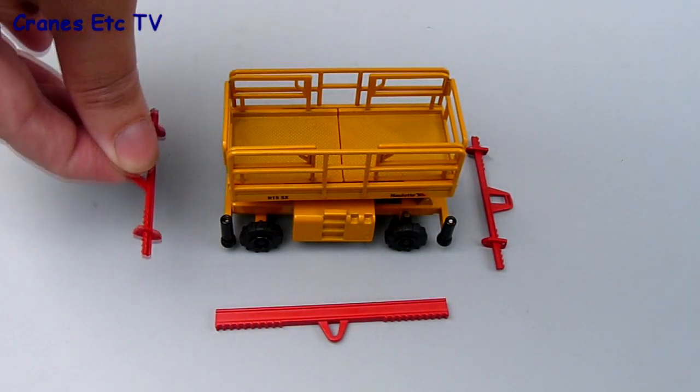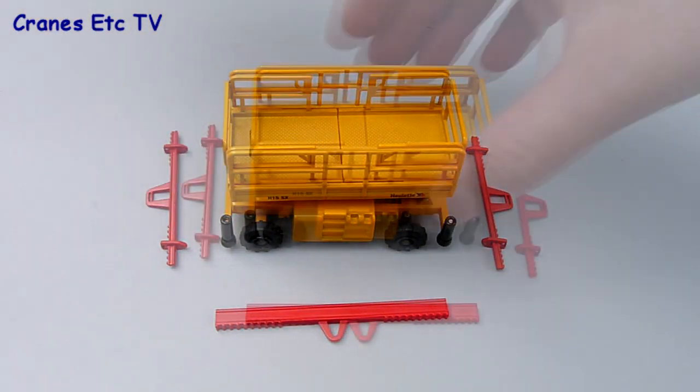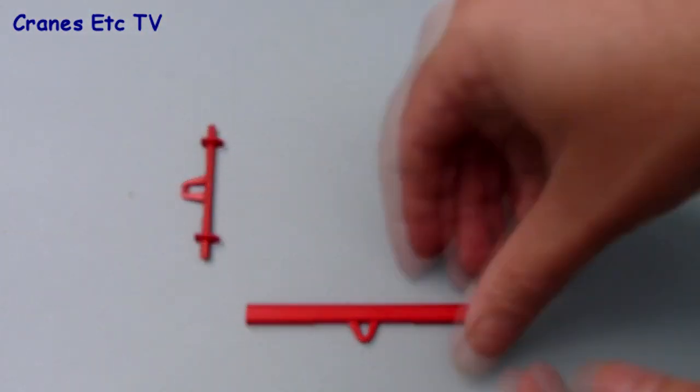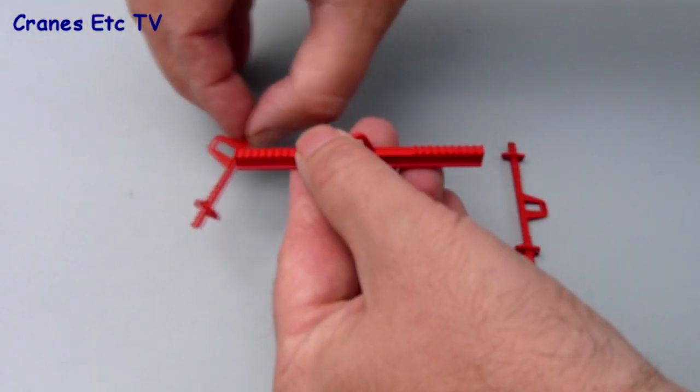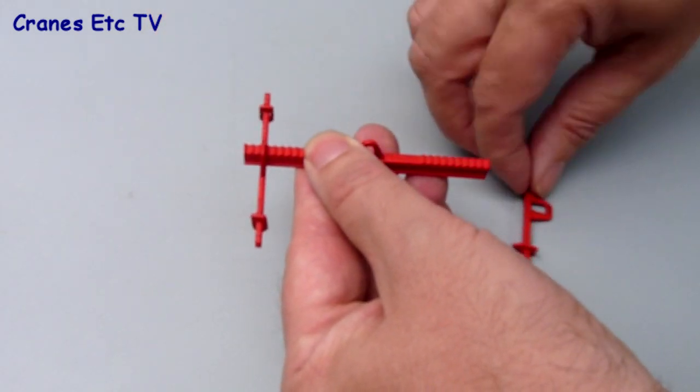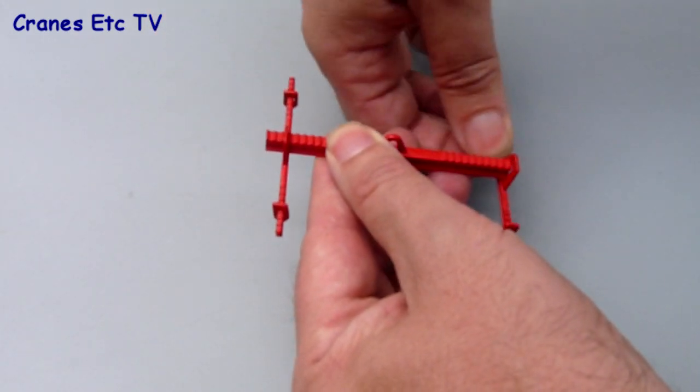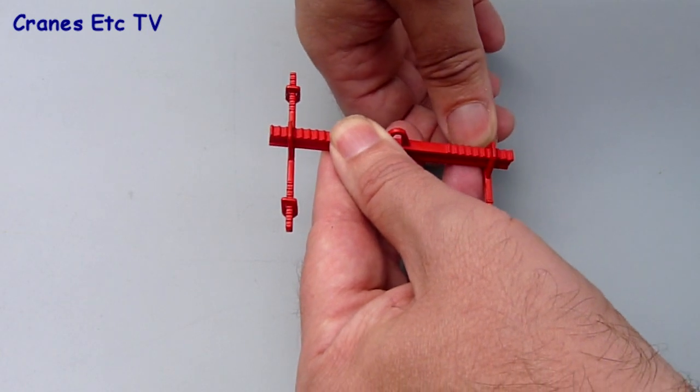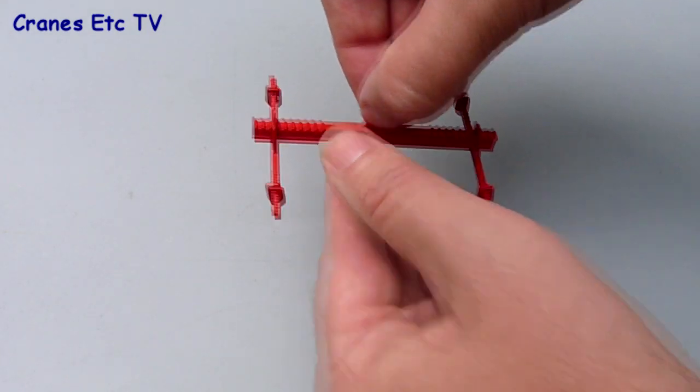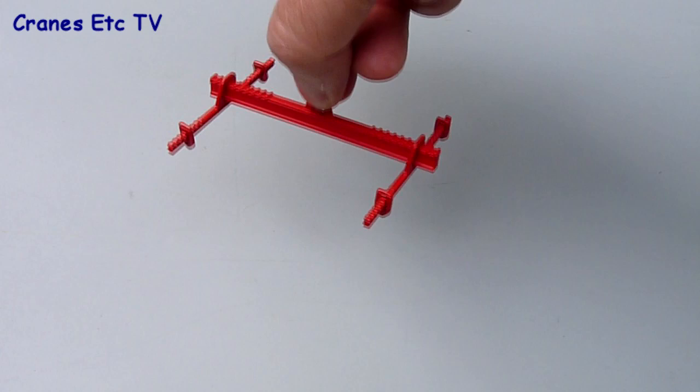So when you've got it roughly sized up you can take the scissor lift away and then assemble the lifting beams. Just take the main beam and put the two cross beams on at each end. When you've done that you've formed your lifting frame and you can just attach the chains onto the lifting beam and then onto the load.